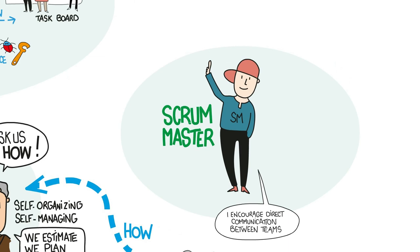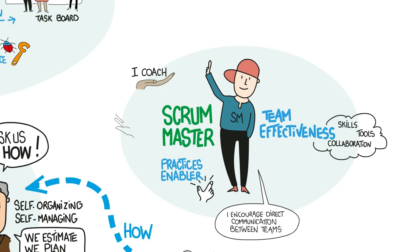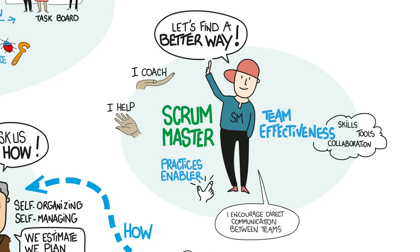The Scrum Master is accountable for the Scrum Team's effectiveness. He does this by enabling the Scrum Team to improve its practices and collaboration. He doesn't tell people what to do, but rather coaches them to recognize, understand, and address the issues as they arise. A high-performance team is continuously improving, so the Scrum Master is continuously helping the team and the organization to find better ways of doing what they do.